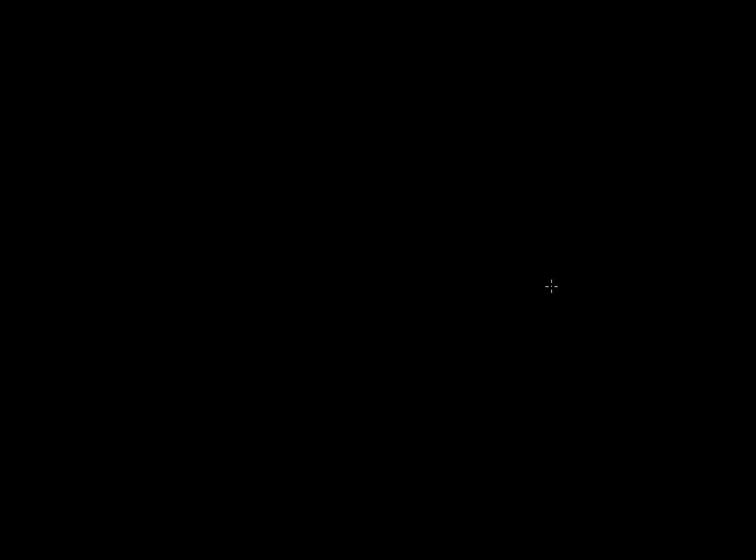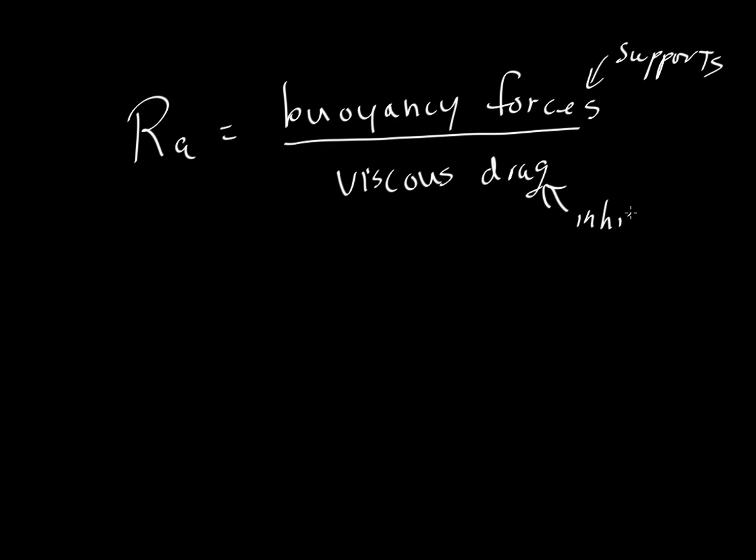Now how do we decide which one is faster? We use the Rayleigh number. So the Rayleigh number is a balance of buoyancy forces, so the stronger the buoyancy forces, then the more likely we would have convection, and then we have viscous drag, and those viscous drag forces would inhibit convection. So this supports or enhances, and this would inhibit convection.